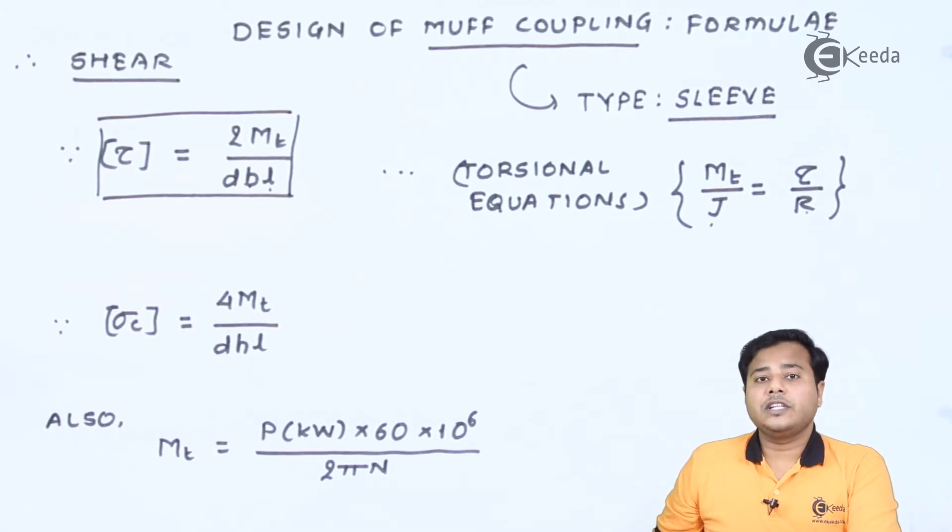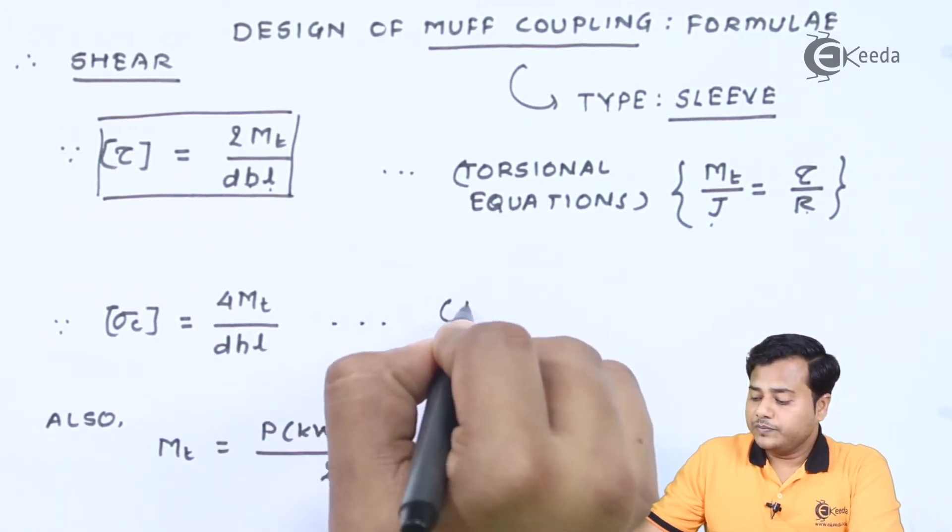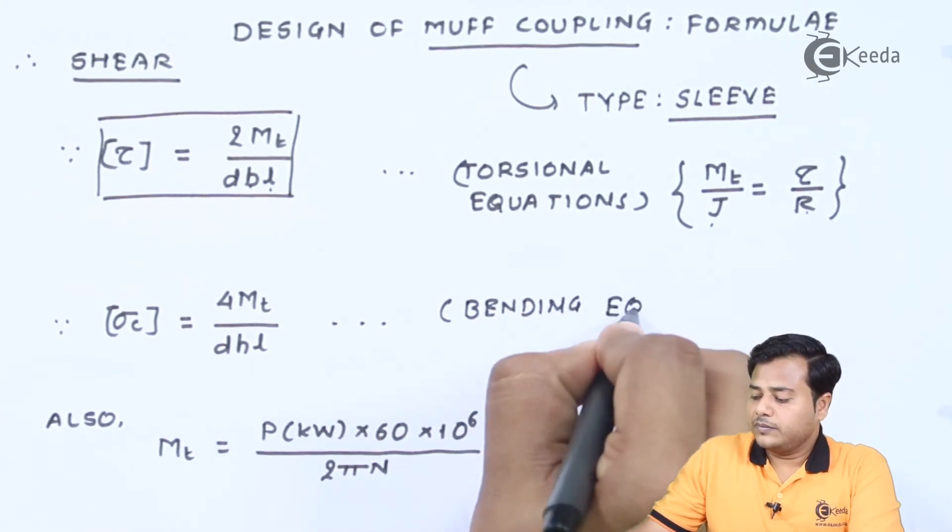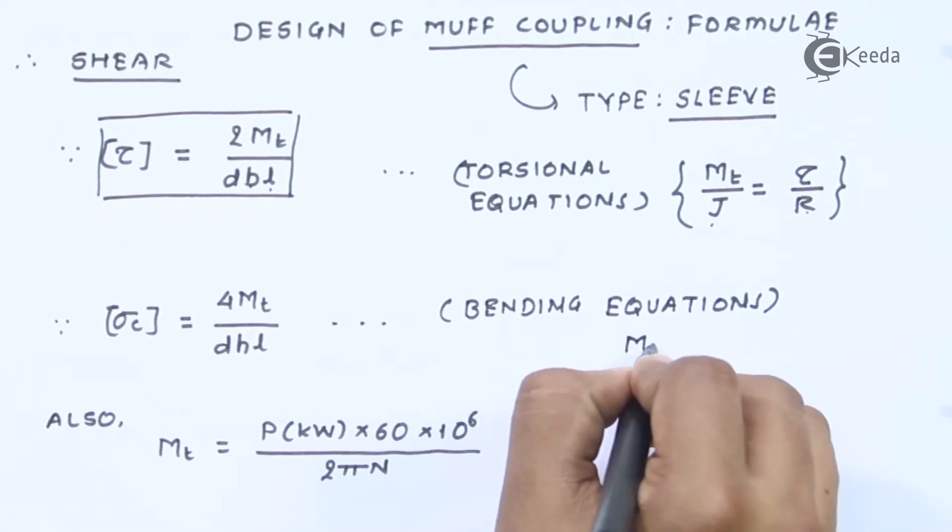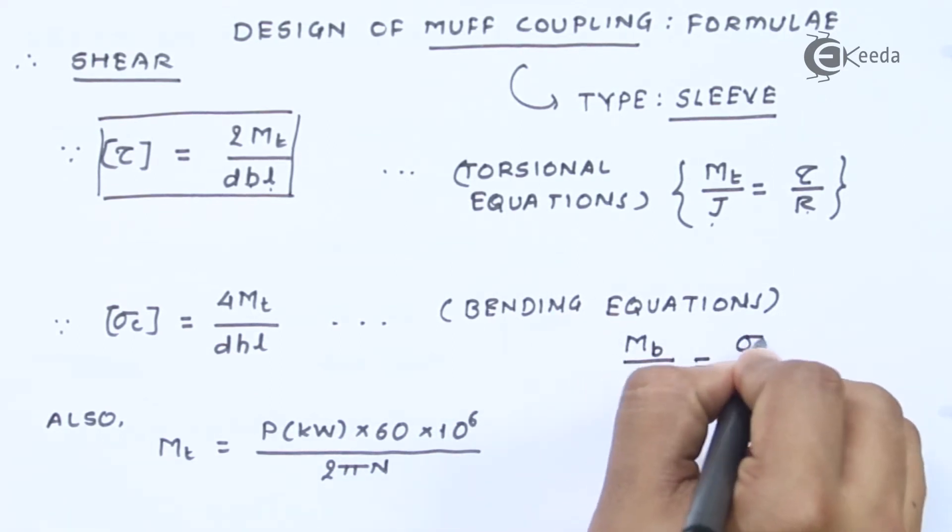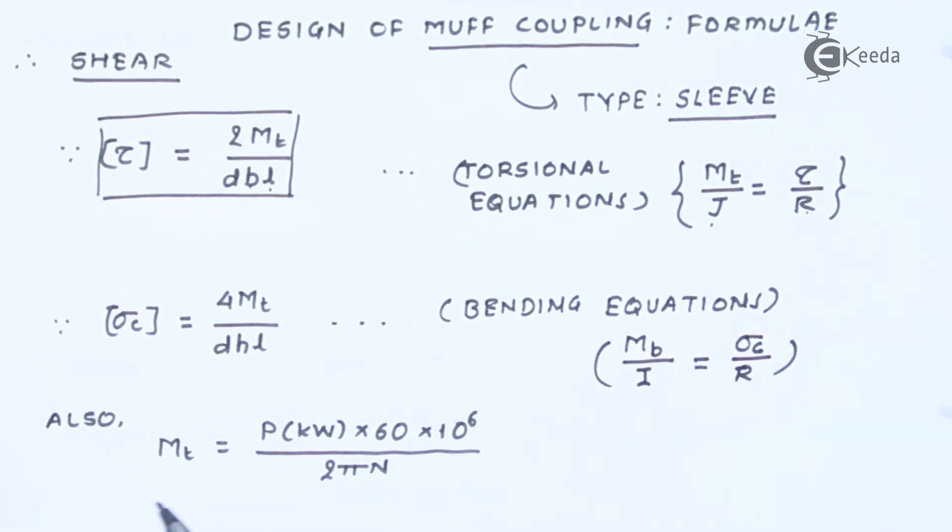The second criteria that we know is compression or crushing. Now, this formula is based on bending equations. We have seen the bending equations again in the subject of strength of materials, which are, again in case of shaft, where the bending moment in this case is equal to the torsional moment. I is the moment of inertia of the cross section about the neutral axis. Sigma is the compressive stress and R is the distance of the extreme fiber from the neutral axis. Again, using this particular expression where it was derived, we have obtained this formula.